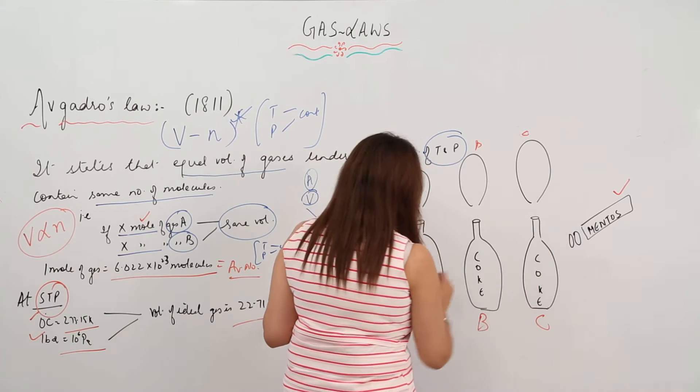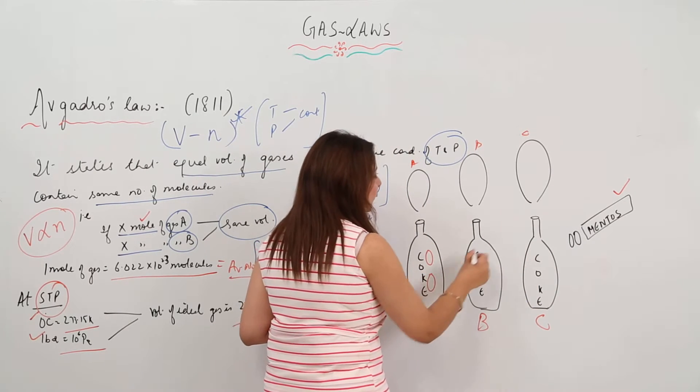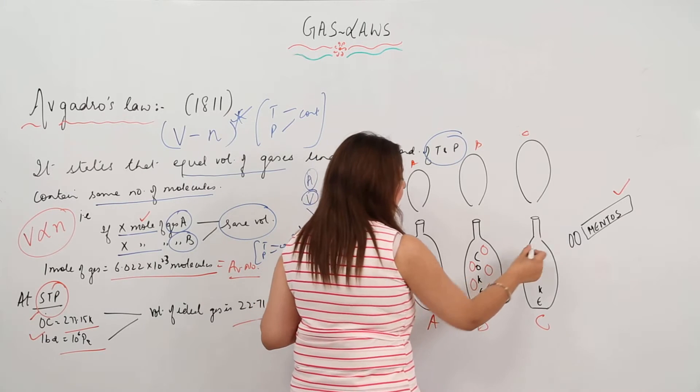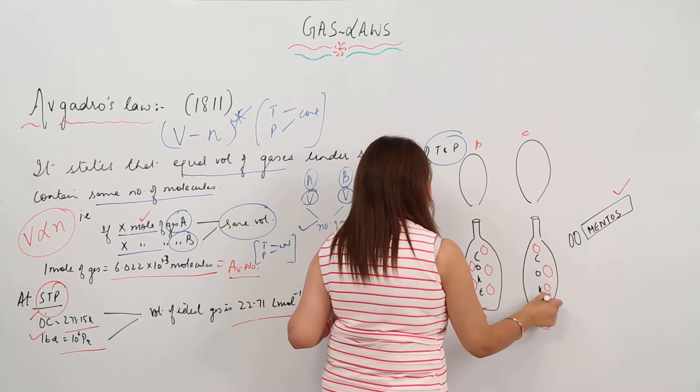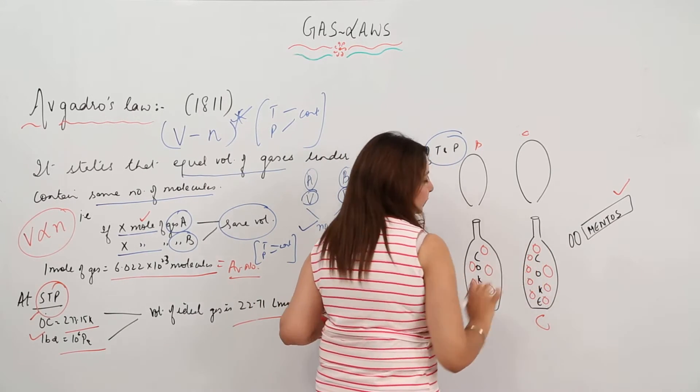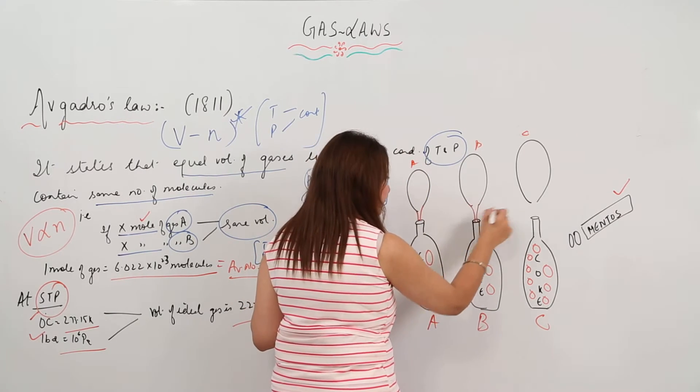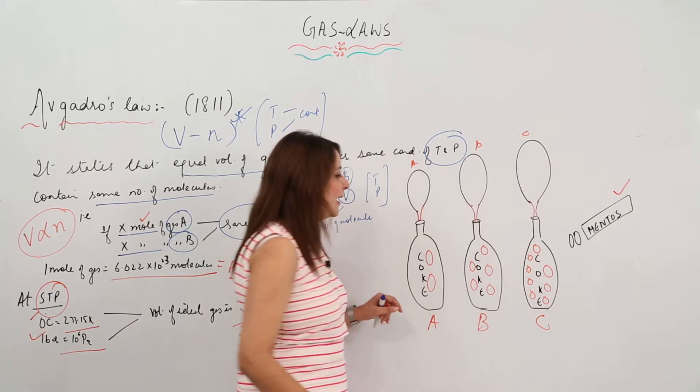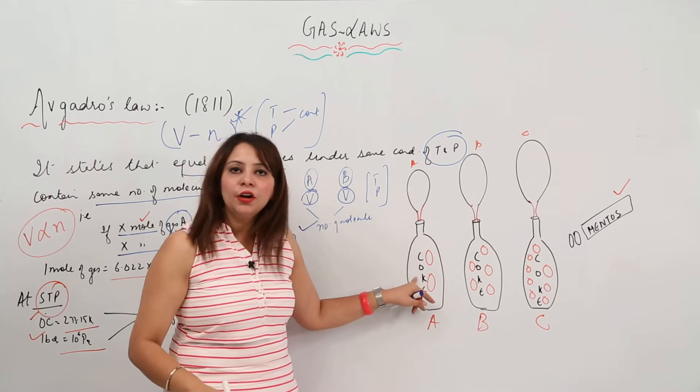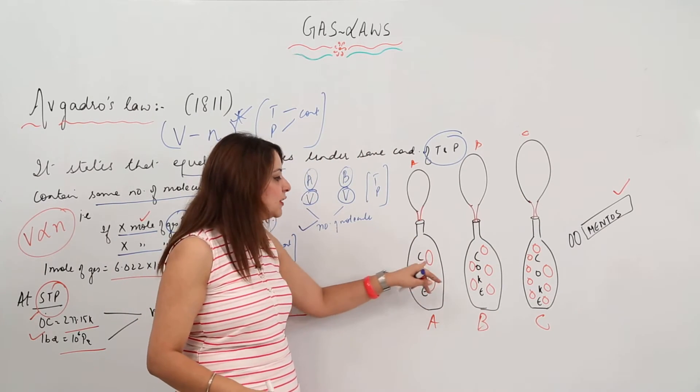I'm going to add two Mentos to bottle A, five Mentos to bottle B, and eight Mentos to bottle C. After that, I'll fix a balloon on each. They already contain gas, and when the Mentos and coke react, they will produce more gas.